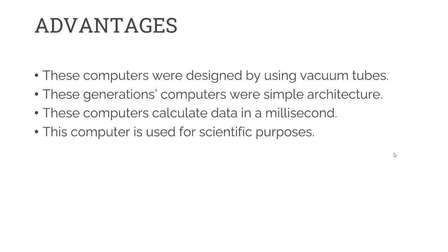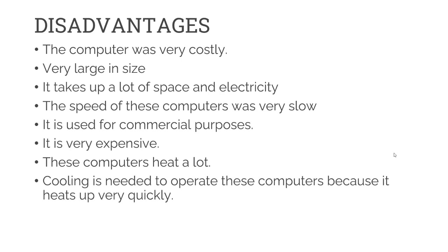Advantages of first generation computers: they were designed using vacuum tubes, had simple architecture, could calculate data in milliseconds, and were used for scientific purposes. Disadvantages: the computers were very costly and large in size, took up a lot of space and electricity, had very slow speed, were used for commercial purposes only, were very expensive, generated a lot of heat, and required cooling to operate.